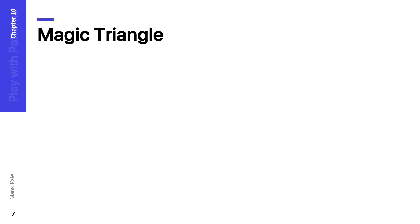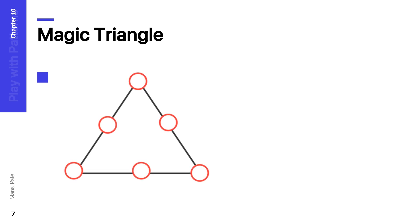Now let us see the magic triangle. What is a magic triangle? You can see here — a triangle is given.